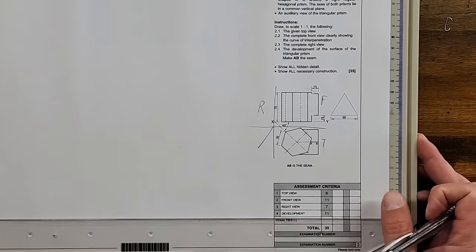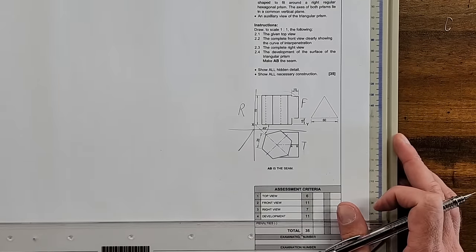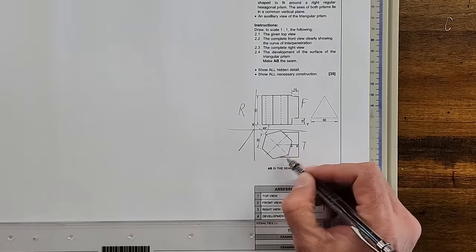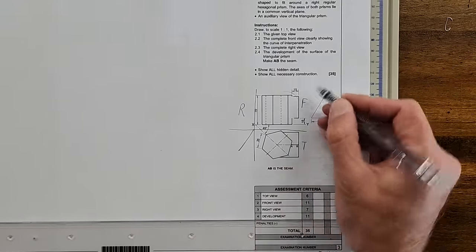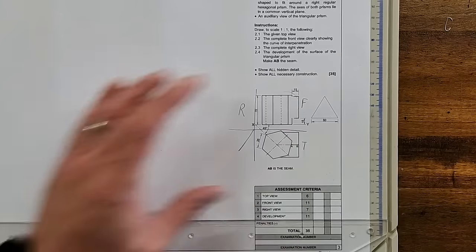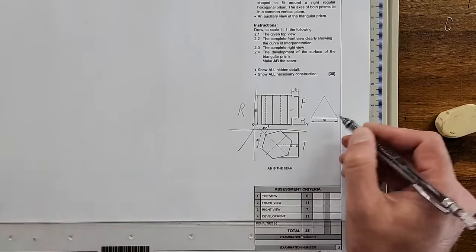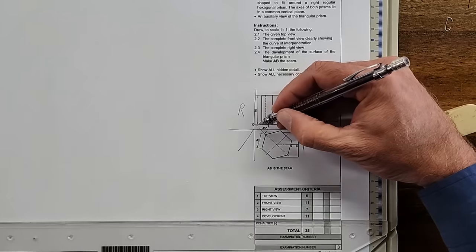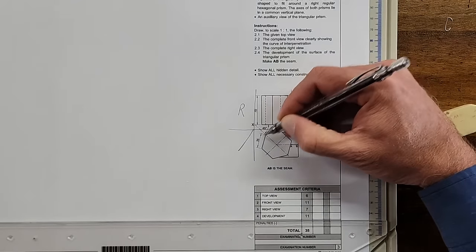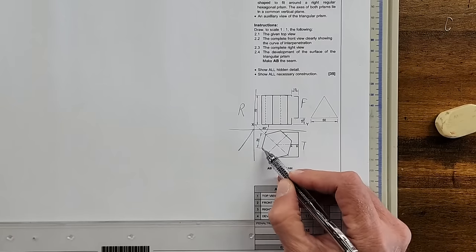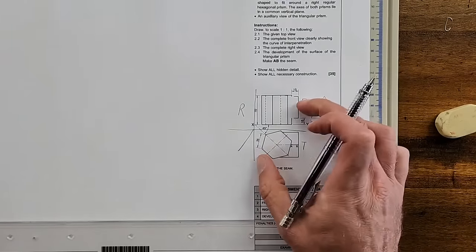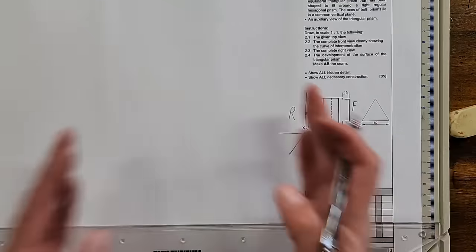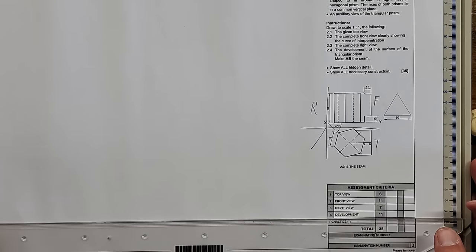Where do I start this drawing? Most likely the top view — specifically the hexagon — and then we'll need the auxiliary view, because the height of the triangle isn't given. We're going to use the auxiliary view to get that height. To start, we do the hexagon. There's a 45-degree angle — that's the center line of the hexagon — and each side is 35. The overhang is just 15.